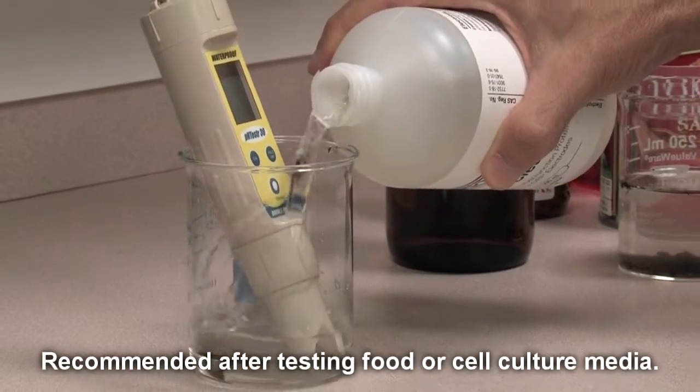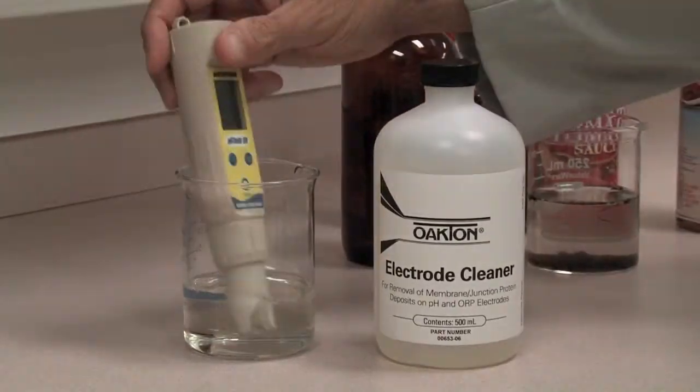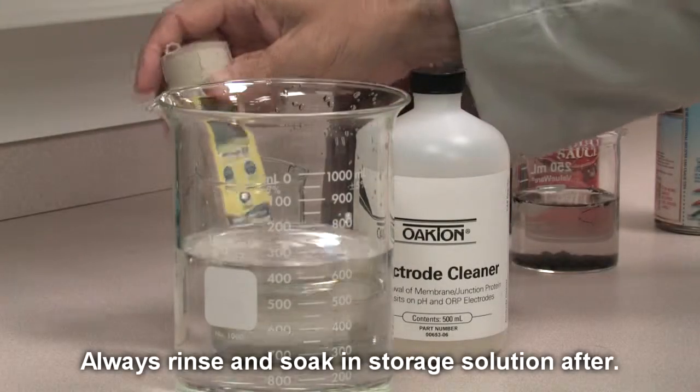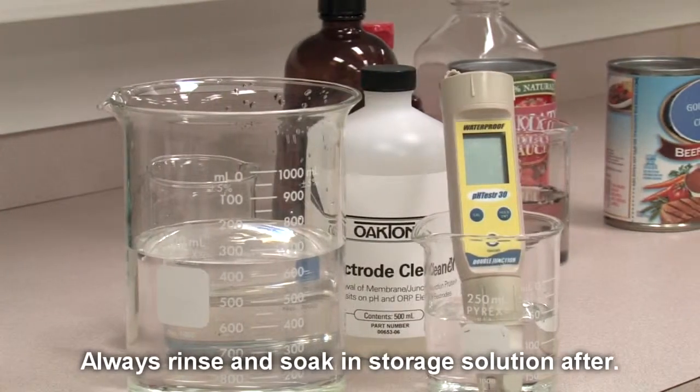For protein removal, soak the tester electrode in electrode protein remover solution overnight. The enzymes will remove proteins from glass and plastic. In the morning, rinse the electrode with deionized or distilled water and soak for 1 hour in storage solution.